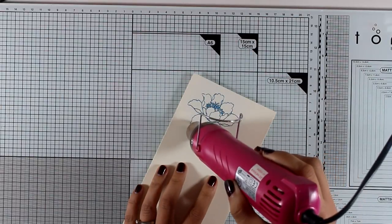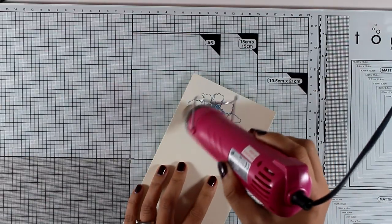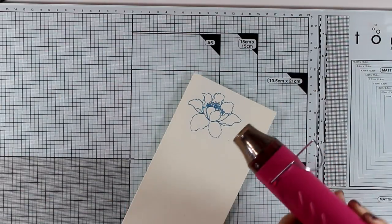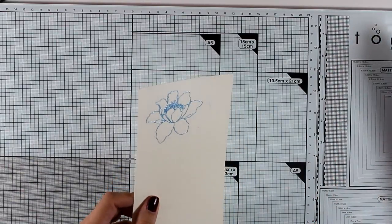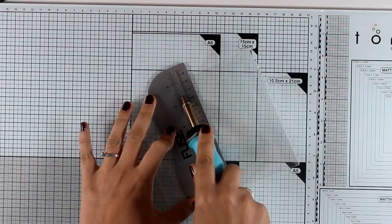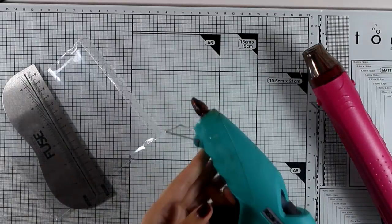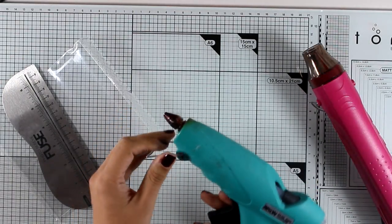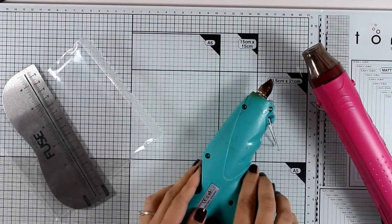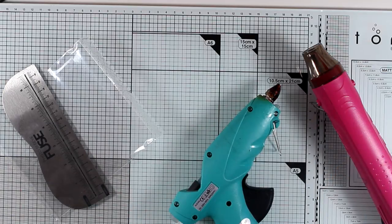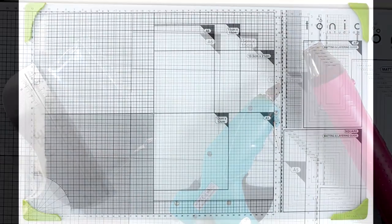And finally, it takes heat beautifully, which was not the case with my self-healing mats. So you can even emboss on top of it, you can use your fuse tool on top of it, and you can even use your heat gun. And the truth is that the silicone is super easy to remove once it dries because it's such a slick surface.